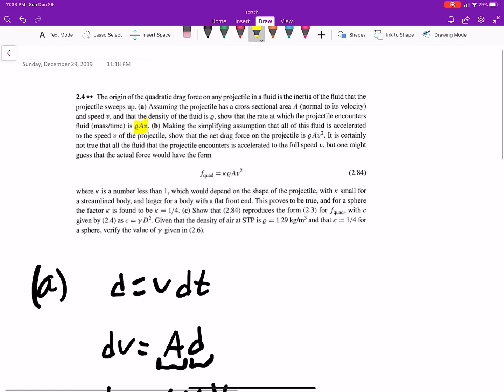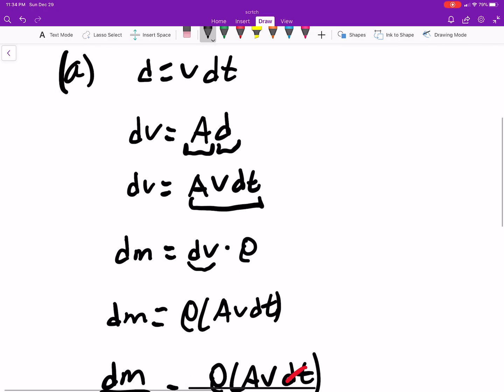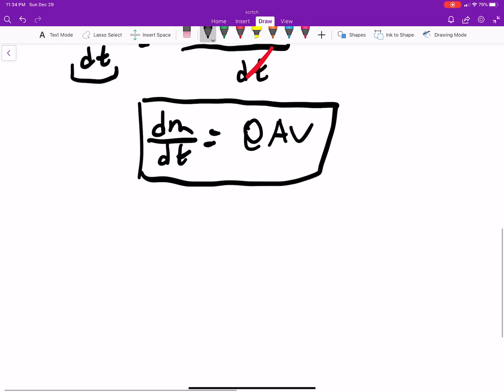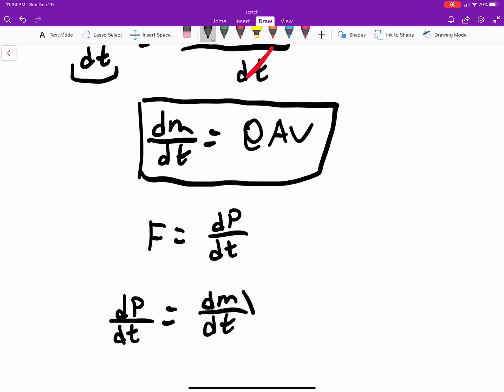Now we need to do part B, which says simplifying assumptions that all fluid is accelerated to the speed V of the projectile, so that the net drag force of the projectile is ρAV squared. Okay, well, the big thing to know is that our force is equal to our change in momentum.